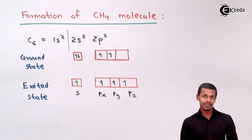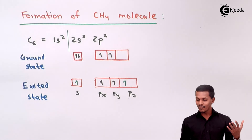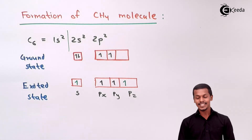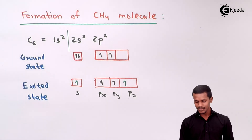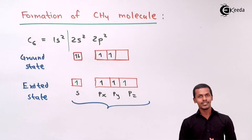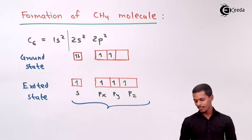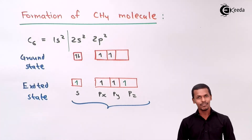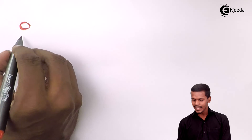The next step is mixing and recasting of the atomic orbitals. We now have four atomic orbitals — one S, one Px, one Py, and one Pz. Since four atomic orbitals are combined, they will form four equivalent hybrid orbitals. Let me give you an idea of how this mixing takes place.